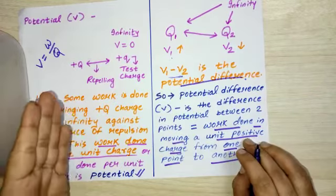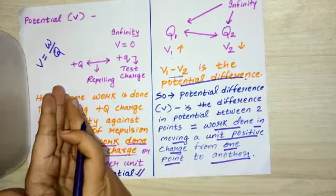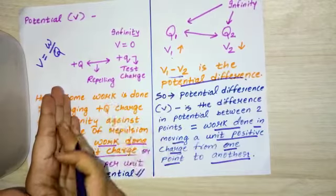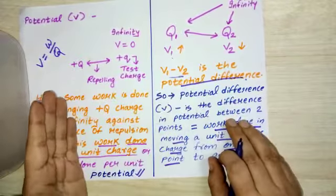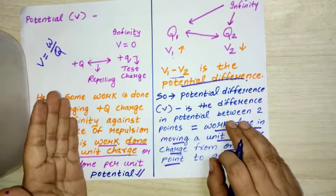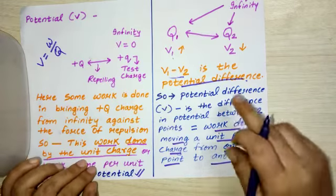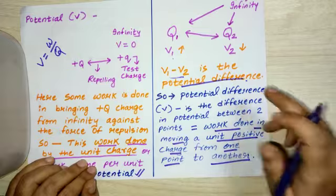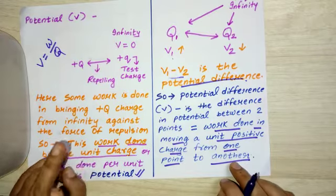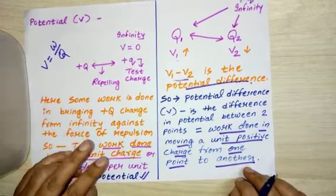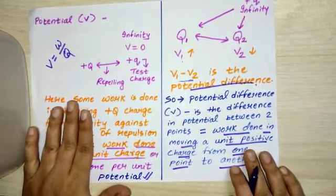Whenever you are taking a charge from one point to another, the total work done during that period will be known as potential difference. In potential difference, you will find the term 'from one point to another' because we have to find the difference between two points. And in potential, you won't find any such term.